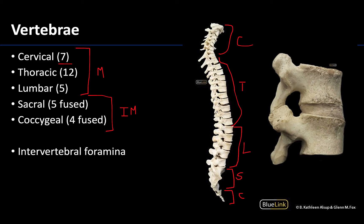This is a lateral view of the articulated vertebrae, which affords a nice view of the intervertebral foramina throughout this region. Focused in on the lumbar region, you can see how the intervertebral foramina are formed by superior and inferior notches of neighboring vertebrae — this is where spinal nerves and primary rami will exit the vertebral column, in close relationship with an intervertebral disc.